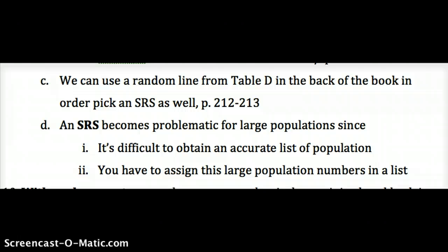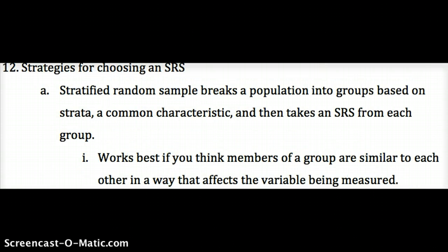Problems with an SRS: it's difficult to obtain an accurate list of an entire population as it gets large, and you have to assign numbers to that large population, which becomes problematic. Different surveys also require either using replacement — where an individual goes back into the pool and can be chosen again — or without replacement, where you skip that number if chosen again. Without replacement is the most common way to sample.